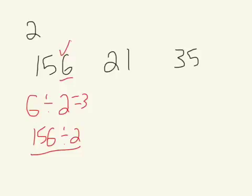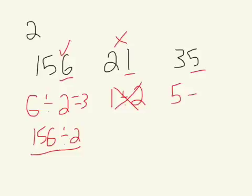When we look at 21, we look at the last digit and we can see that 1 — you cannot divide by 2. So because you cannot divide it by 2, we know that 21 is not evenly divisible by 2. Lastly, when we look at 35, we look at the 5. We know that 5 cannot be divided evenly by 2. Therefore, 35 is not divisible by 2.